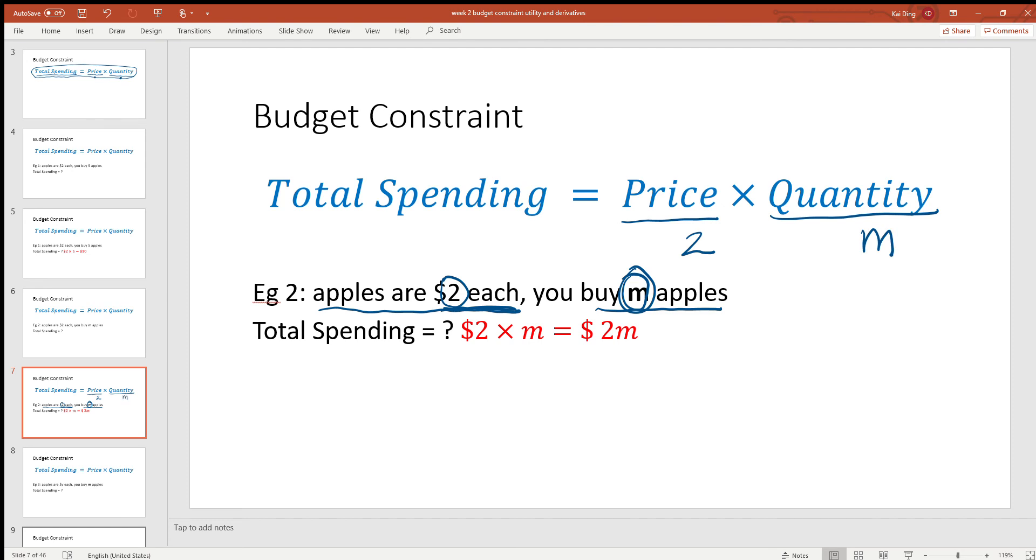How do you get your total spending on apples? Just like before, you multiply price and quantity together. So 2 times m tells you total spending on apples is equal to $2m.